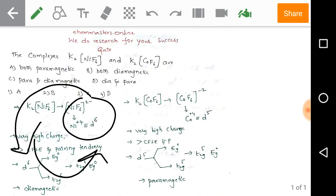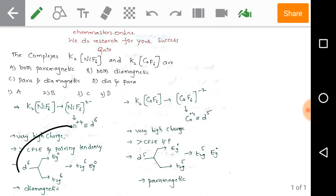This leads to the pairing tendency of electrons in the d orbital levels. By applying this information to the d⁶ configuration of the nickel +4 complex,